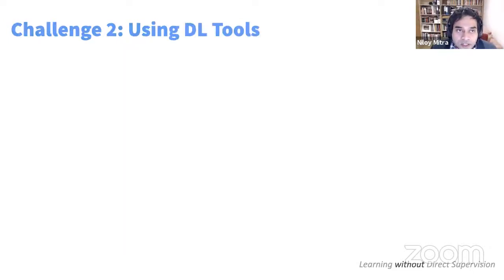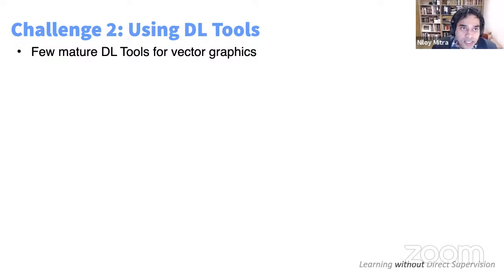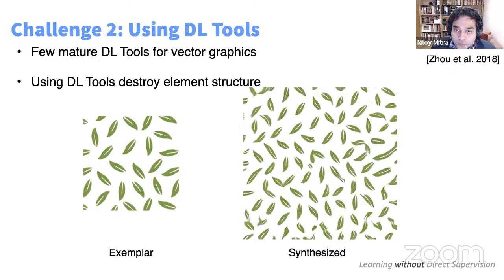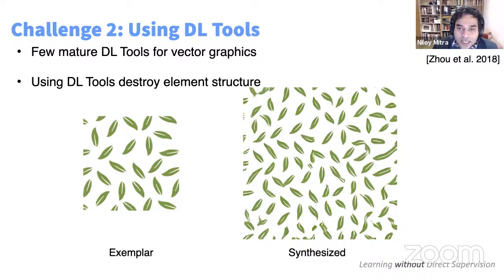Another motivation, coming from the Adobe side: although we've seen tremendous progress in deep learning tools for images, the vector world is lagging behind. If we take a vector representation and apply any successful deep learning method — for example, texture synthesis — the original structure is often lost. The leaves get distorted and warped. What we want is an intermediate step that lets us benefit from deep learning on images, but operating in the vector world.